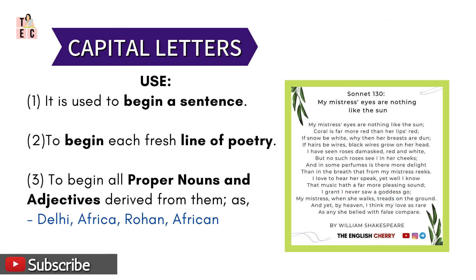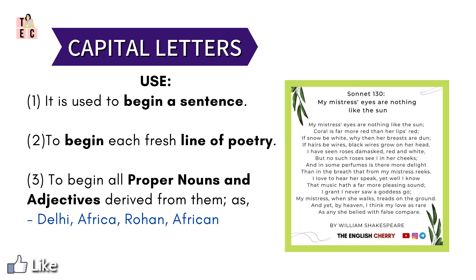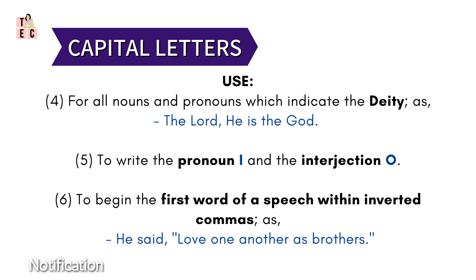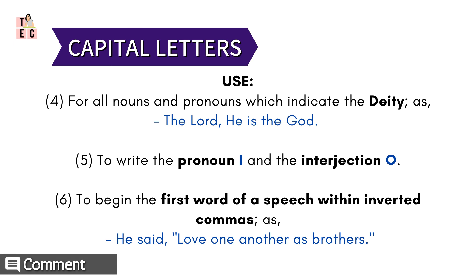Last but most important punctuation marks are capital letters. It is used to begin a sentence. Capital letters are also used to begin each fresh line in poetry, and to begin all proper nouns and adjectives derived from them — like Delhi, Africa, Rohan, etc. We also use capital letters for all nouns and pronouns which indicate the deity — for example, 'the Lord,' 'He is a God.' The L of Lord and the G of God are capital.